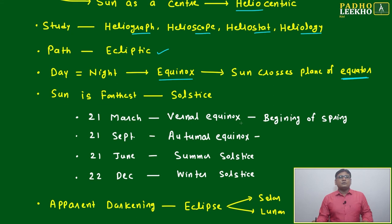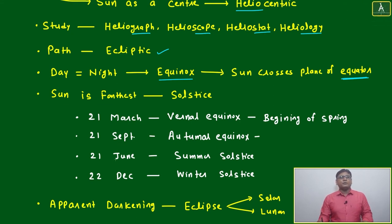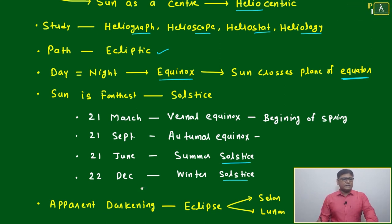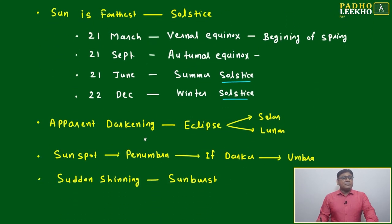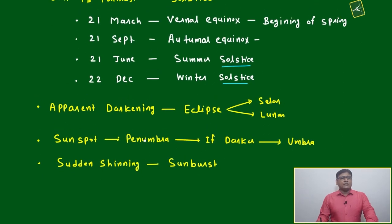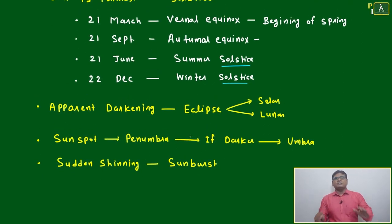21st March is the vernal equinox — the beginning of spring. Similarly, 21st September and 21st June is the summer solstice, and 22nd December is almost the winter solstice.